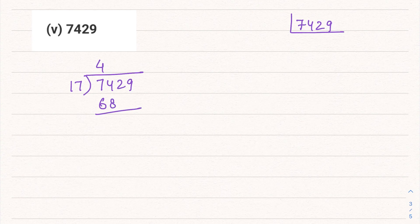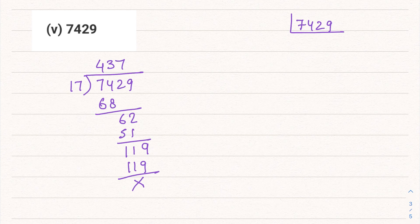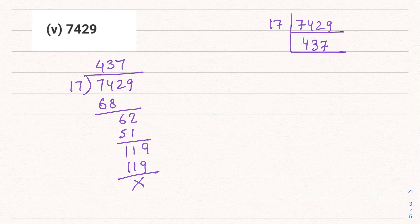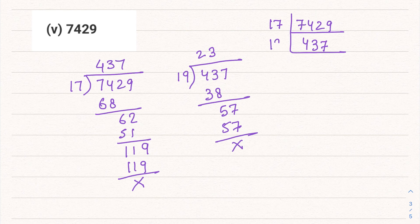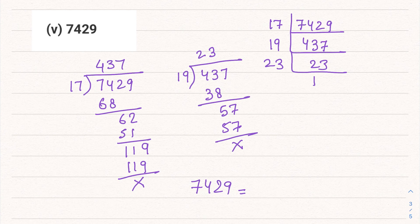Checking 7429 ÷ 17: 17 × 437 = 7429. Now checking 437: it comes in the table of 19. 19 × 23 = 437. So the prime factors of 7429 are 17 × 19 × 23.